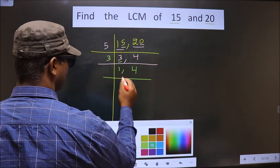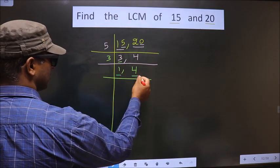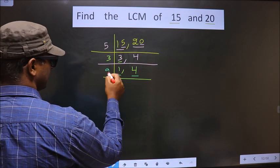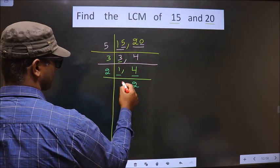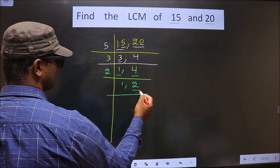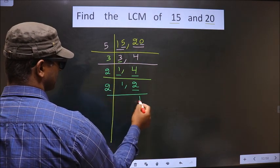Now here we got 1, so we focus on the next number, which is 4. 4 is nothing but 2 times 2 is 4. Now we got 2. 2 is a prime number, so 2 times 1 is 2.